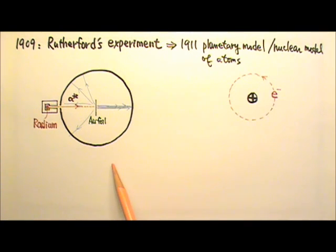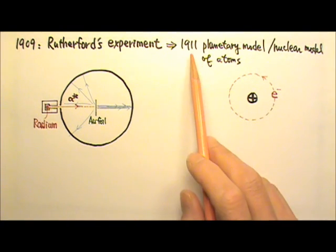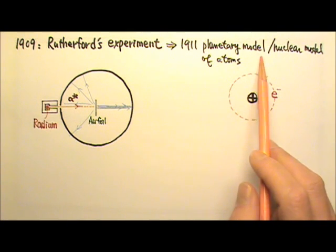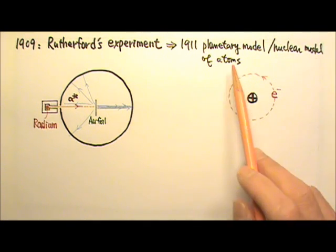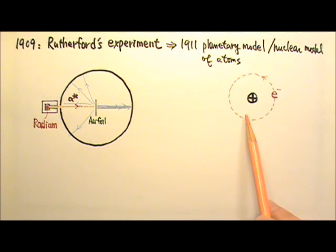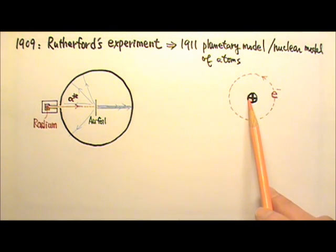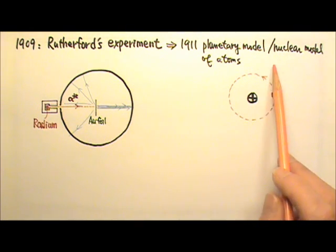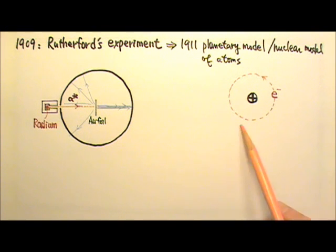These experimental results led Ernest Rutherford to publish his planetary model or nuclear model of atoms in 1911. He proposed that an atom has a structure similar to that of the solar system. The nucleus is like the sun, and the electrons orbit around the nucleus like the planets orbit around the sun.